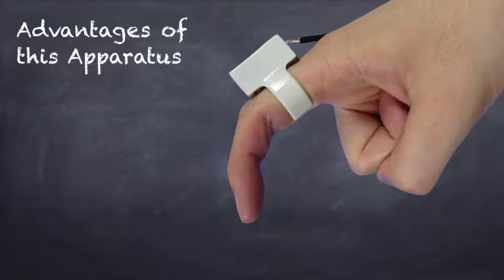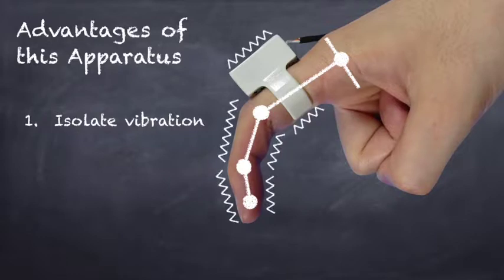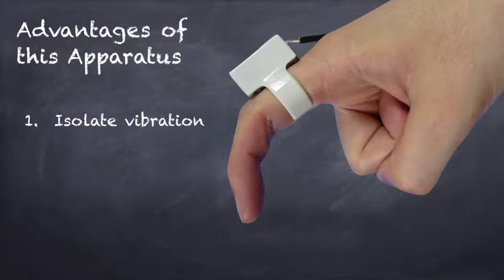We confirm that attaching the vibrators on the proximal part of each finger makes a user feel that the entire finger is vibrating and realizes sufficient isolation from the vibrators attached to the other fingers.